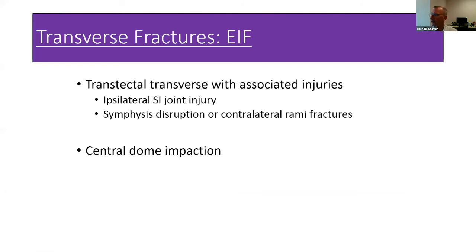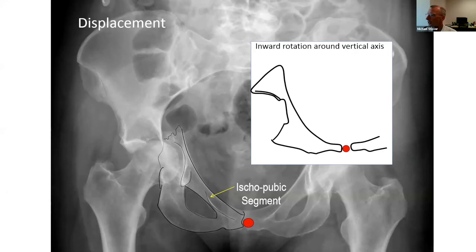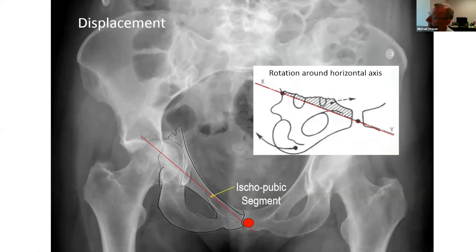For transverse fractures, they should typically be transtectal—going right through the weight-bearing surface. Indications include loss of control of the ischiopubic segment or lower half free segment when there are ipsilateral or contralateral rami fractures or symphysis disruption. You may also lose control of the cranial intact portion with an ipsilateral sacroiliac joint injury. Central dome impaction may be very hard to access without an associated posterior wall fracture. An intact symphysis is preferred because it provides rotational control of the opposite column and rotation along the horizontal axis.